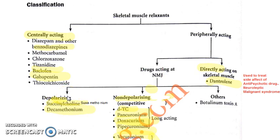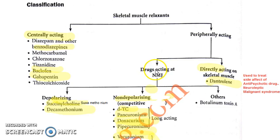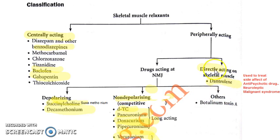Succinylcholine is the word given to you in the exam, and you have to explain everything about it. First, tell them succinylcholine is a skeletal muscle relaxant. Second, it is a peripherally acting skeletal muscle relaxant. Third, it acts on the neuromuscular junction — not on the muscle itself. And it is a depolarizing one; it depolarizes the neuromuscular junction. There are also non-depolarizing ones and directly acting ones, but our focus is only succinylcholine.